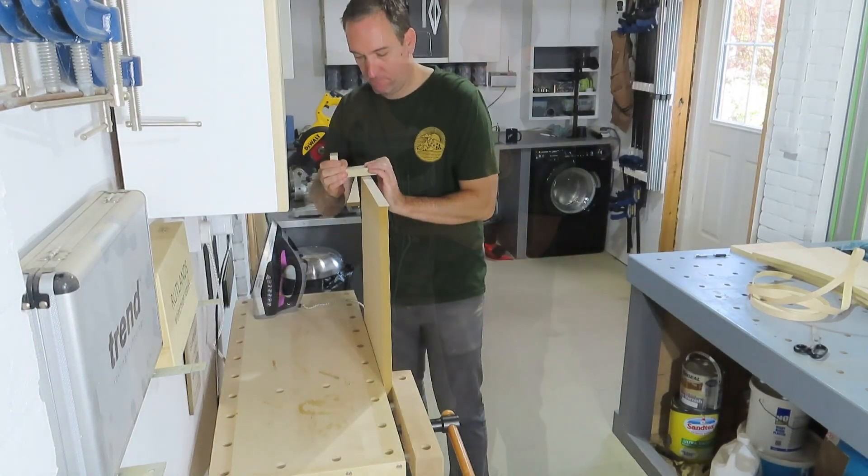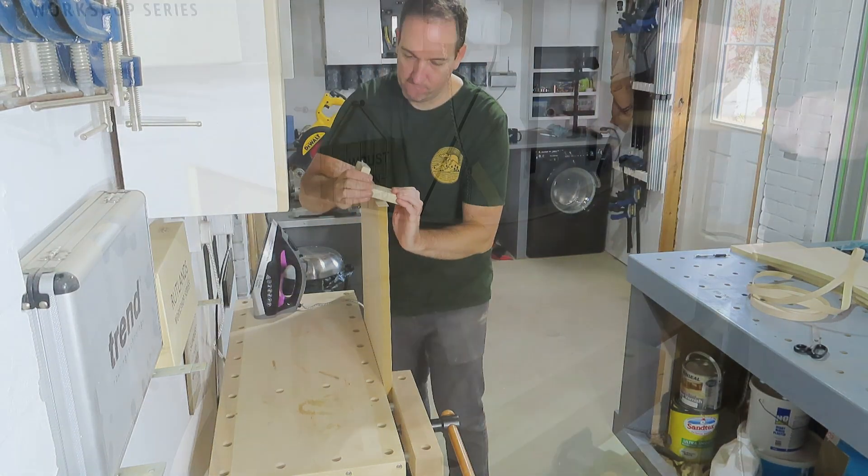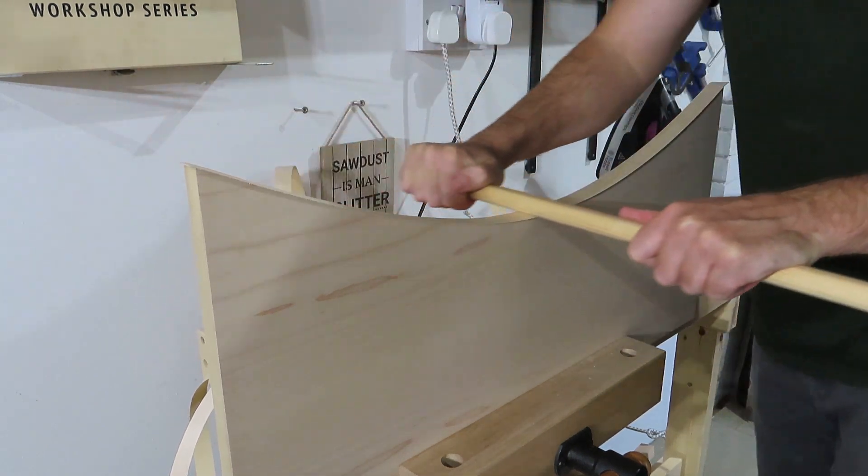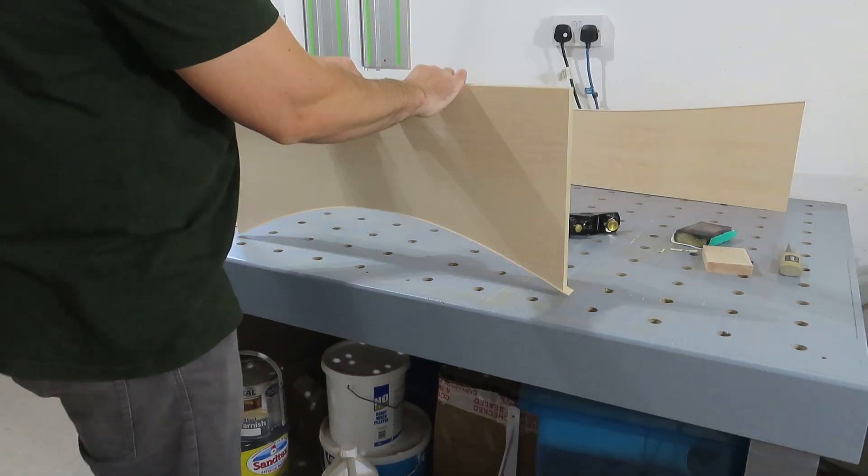Next, it was time for some iron-on edging. These were all going to get painted afterwards, but particularly on the curve sections, this would give a much better finish with paint on the end of the MDF.